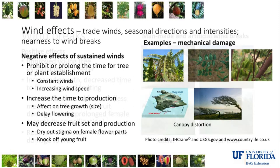Wind can also affect fruit set during flowering. Dry, desiccating winds during flowering can dry out the stigmatic surfaces on the female parts of the flowers, resulting in less fruit set and less production. Winds during the season when fruit is on the tree can knock fruit off. Trees naturally drop fruit — a tree may set 500 fruit but at harvest time only 125 to 200 remain due to natural physiology. Adding wind can knock off all or most of the fruit.